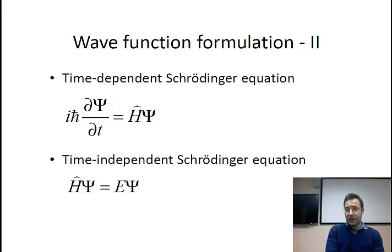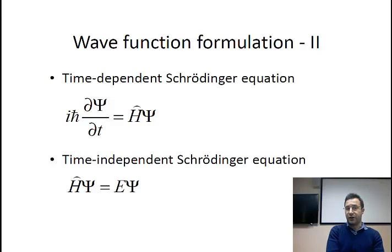If you are interested in the stationary solutions of a particular system, you solve the time-independent Schrödinger equation, which is an eigenproblem. Your unknown is still a wave function but also the energy connected to it, and what you get from solving this equation is a set of allowed energies — in other words, the energetic spectrum.